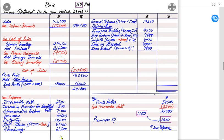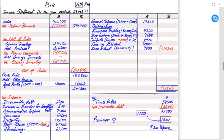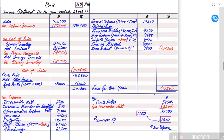To summarise: we started with sales, deducted cost of sales to get gross profit, added other income to get an unnamed subtotal, then deducted all expenses. In this question, the expenses exceed gross profit plus other income, so the final answer is negative — this is a loss for the year. It is very rare to get a loss figure in an examination. If the final value is positive, it is written as profit for the year; if negative, it is a loss for the year. I hope you are able to understand the concepts of income statement.